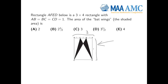We also know that the distances between the points A, B, C, and D are all 1. And using that information, and only that information in this picture, we want to know what the area of the bat wings — that is the shaded area — we want to know what that area is.